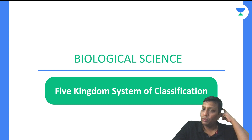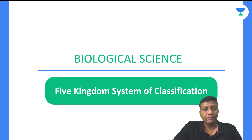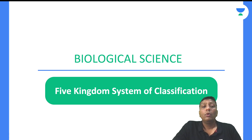We are now in the seventh lecture of biological science, and the topic is the five kingdom system of classifications. Whenever we discuss any organism, the arrangement of organisms is very important. Biological science means the study of living beings. There are different ways to categorize and describe organisms, and systematic organization is essential. Many scientists have tried to achieve this.